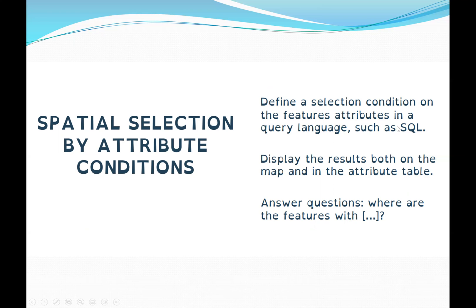We define a selection condition on the features' attributes in a query language such as SQL. When we run this query, it will display the result both on the map and also in the attribute table. This allows us to answer questions such as: where are the features with the following attributes? Where are these patients from? Or what are their locations?